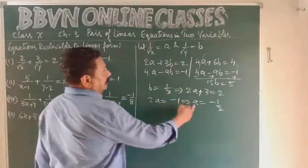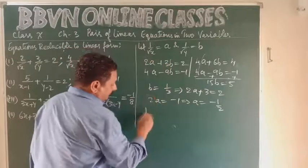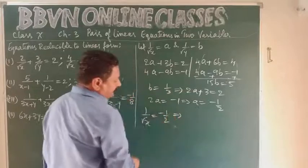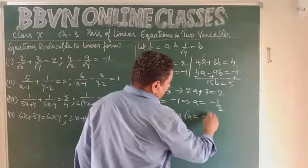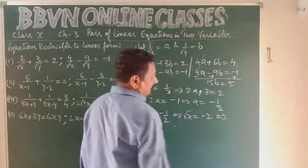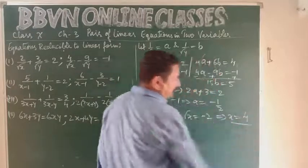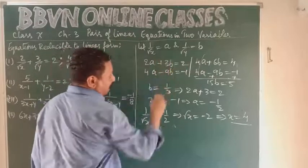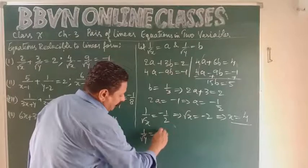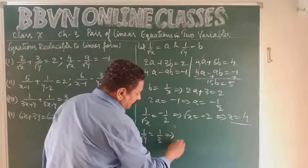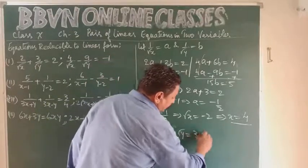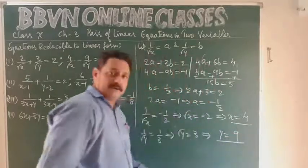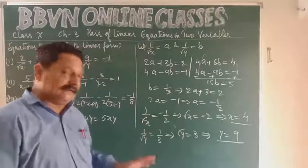Now back-substituting: a = 1/√x = -1/2, which implies √x = -2. Squaring both sides gives x = 4. For b: b = 1/√y = 1/3, so √y = 3. Squaring both sides gives y = 9. We have found the values of x and y.